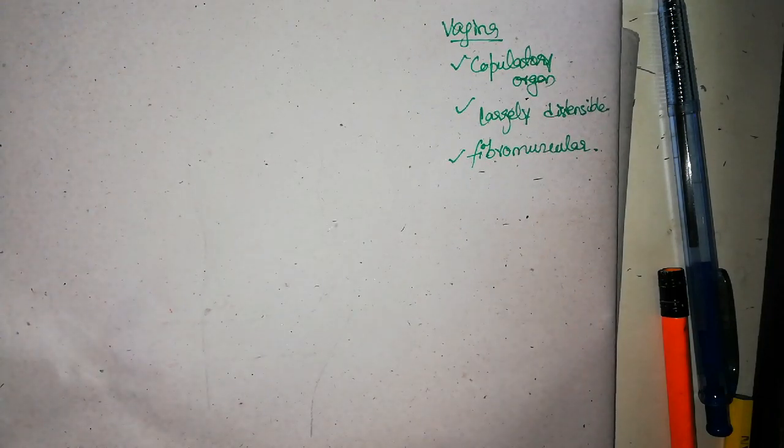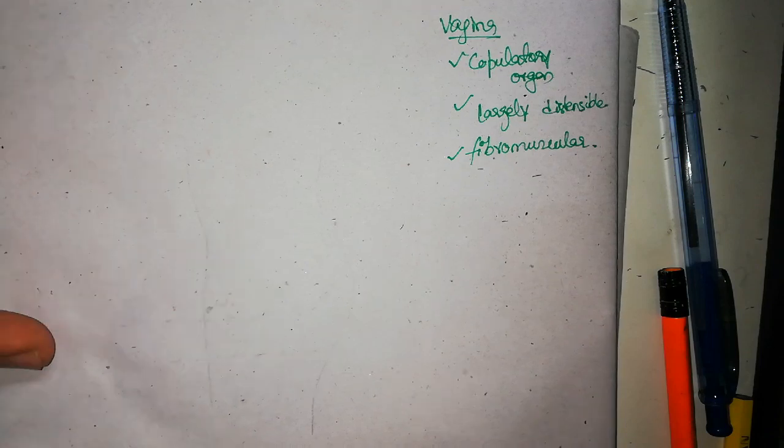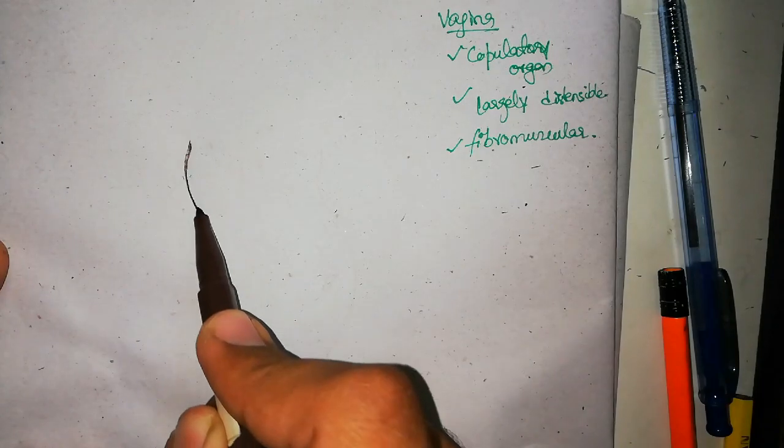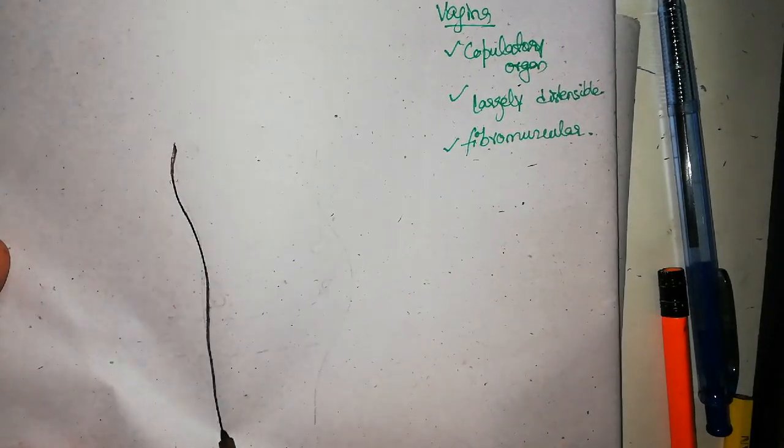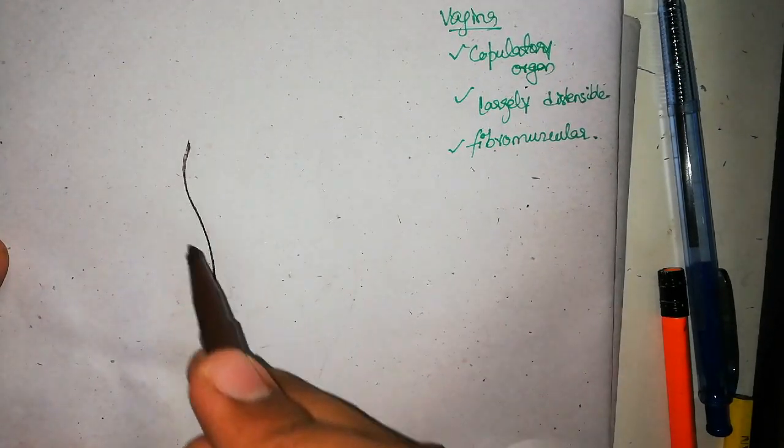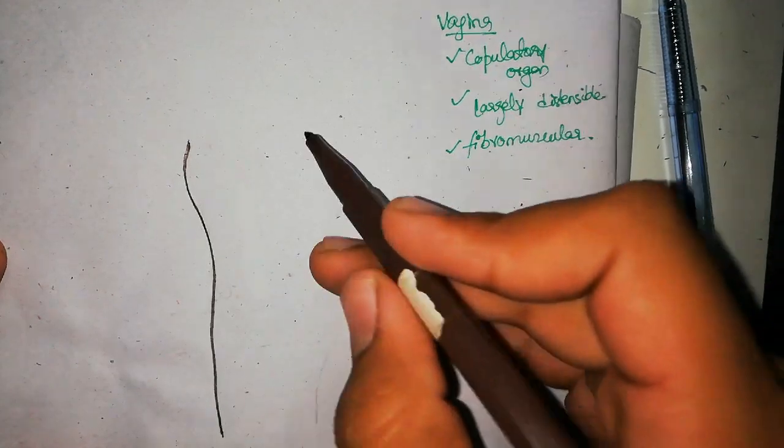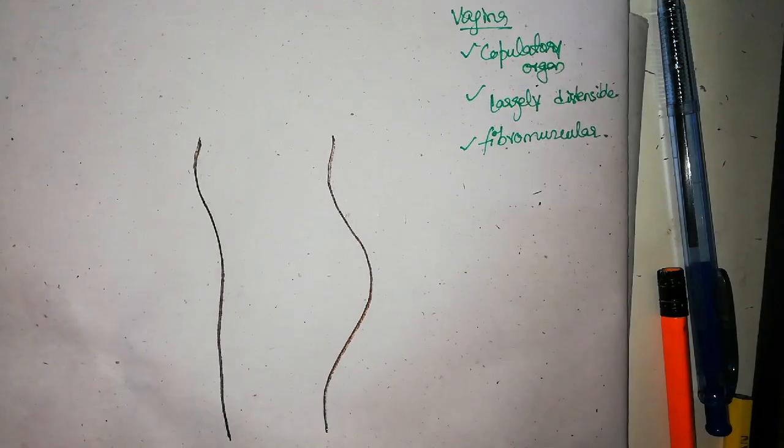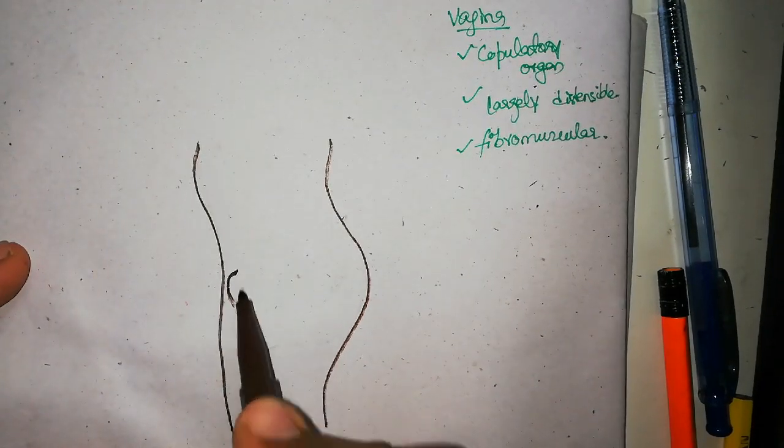In order to understand the position of vagina, let me draw a lady here. This is the anterior abdominal wall and then her thigh, this is her back, the buttock, and then the thigh.